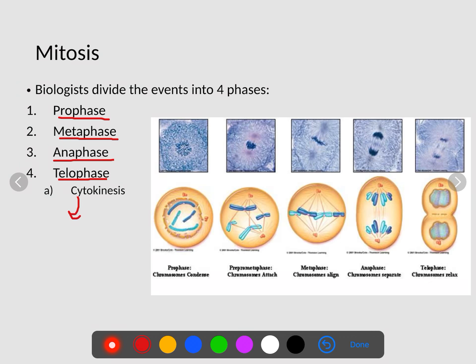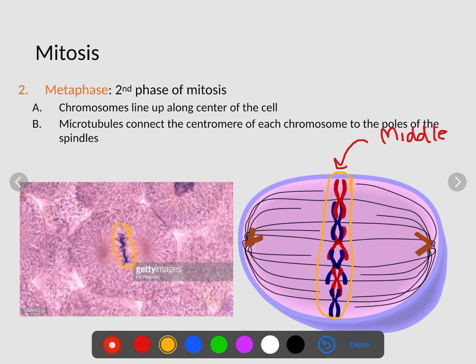The second phase — and the easiest to identify — is metaphase. In metaphase, the chromosomes are lined up in the middle of the cell. M for middle, M for metaphase. Chromosomes are lined up in the center. Structures called microtubules or spindle fibers connect to either side of each chromosome and will act like fishing rods, reeling the chromosomes into the side they need to go to.